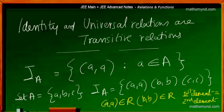Let's look at an important property of transitive relations — that is, the identity and universal relations which we learned earlier are transitive relations. Let's look at how those two relations have a transitive property. The identity relation, as we know, is the pairing of an element with itself — that is the ordered pair (a, a).